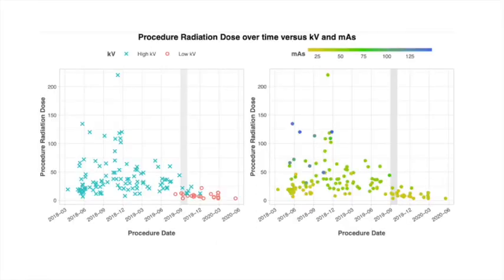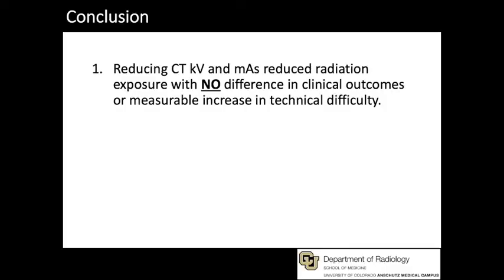In terms of quality improvement, this figure shows radiation dose over time. On the x-axis is time in months, and on the y-axis is radiation dose. The protocol change occurred in September 2019, indicated by the shaded zone. As you can see, there is a preponderance of low-dose studies and lower variability after the change was made. In conclusion, we found that reducing CT KV and MAS reduced radiation exposure without affecting clinical outcomes or measurable increase in technical difficulty.